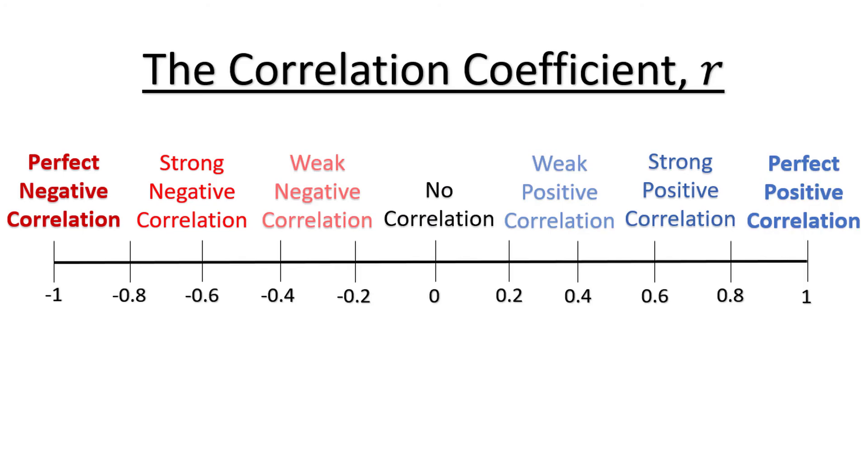It can be helpful to think of the possible values of r on a number line from negative 1 to 1. At the extremes are negative 1 or 1, we have perfect correlations. This would be when a line passes straight through every dot on the scatter plot, which rarely, if ever, happens.